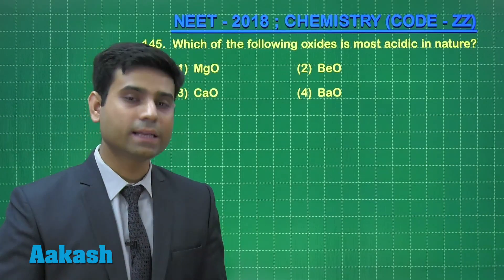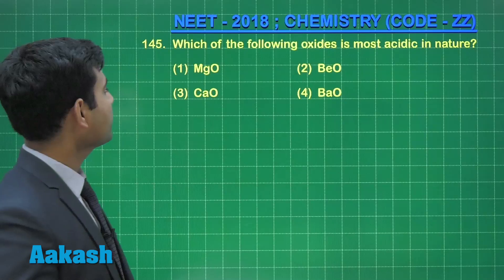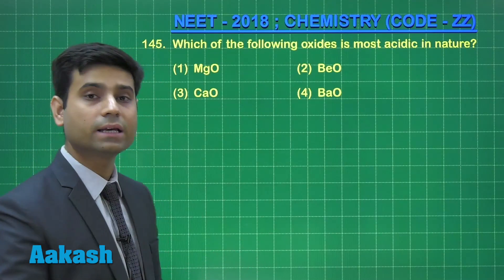Now let us solve the next question which is question number 145. Question number 145 says which of the following oxides is most acidic in nature?